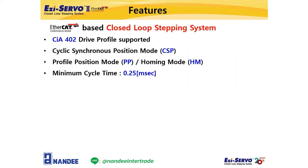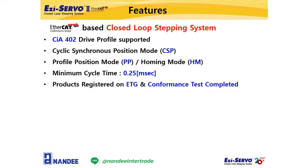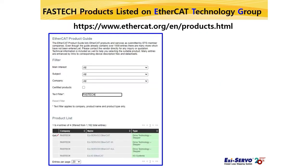Fastech registered the products with ETG, the EtherCAT Technology Group, and completed the conformance test by ETC, the EtherCAT Test Center, an organization affiliated with the EtherCAT Technology Group. These are Fastech's EtherCAT products listed on the ETG website. If you access the official site of ETG and search Fastech, you can see that four types of Fastech EtherCAT slave products are on the list.